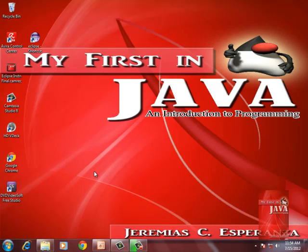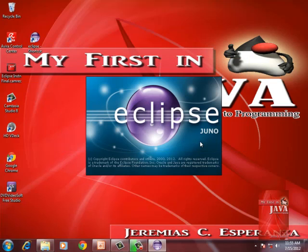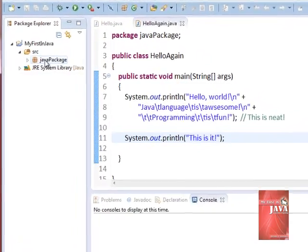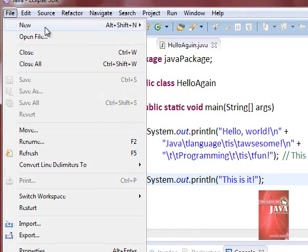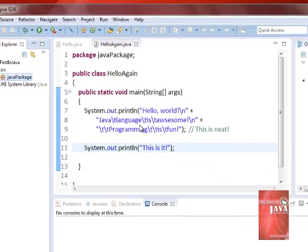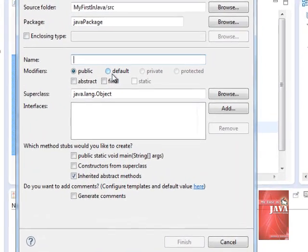So this time we're going to create our program. Launch Eclipse, collapse 'My First in Java', collapse SRC, select and click Java package, then we click File, New, Class. We type the name of our program.